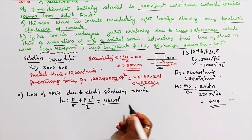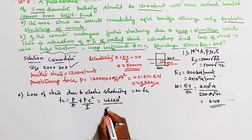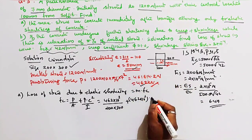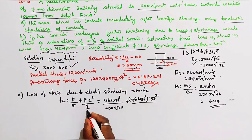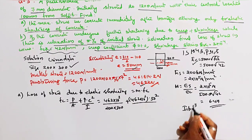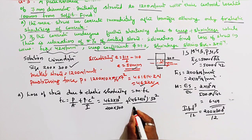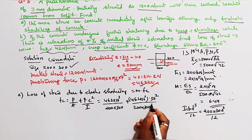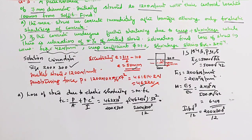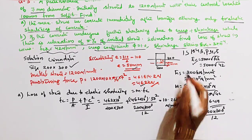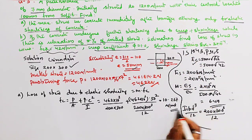Substituting values: fc = P/A + P × e² / I. P = 462 × 10³. Area = 200 × 300. Eccentricity e = 50 mm. I = B × D³ / 12 = 200 × 300³ / 12. Therefore fc = 10.267 Newton per mm square.